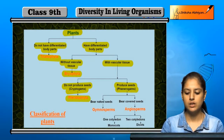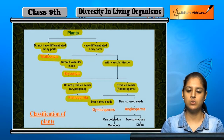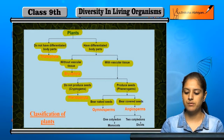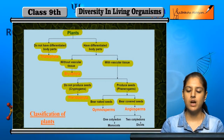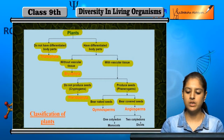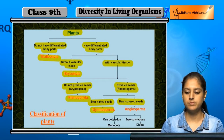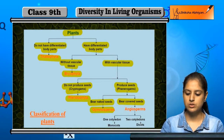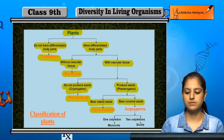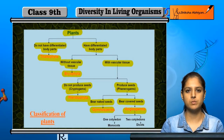If they can produce seeds, the seeds will either be naked or covered. If they are naked, they are called Gymnosperms, and if they are covered, they are classified as Angiosperms.